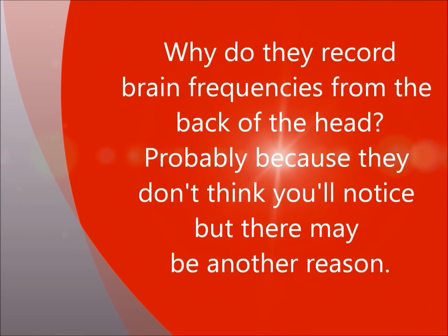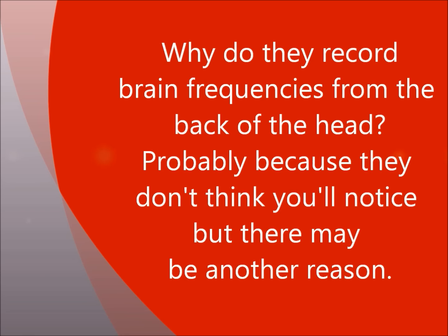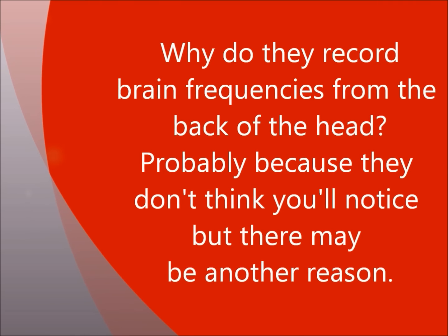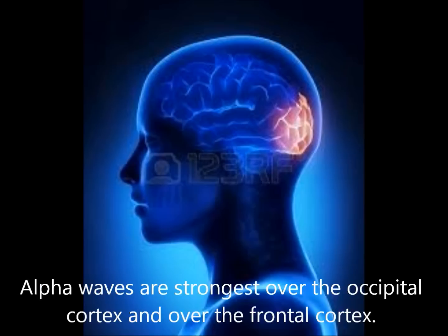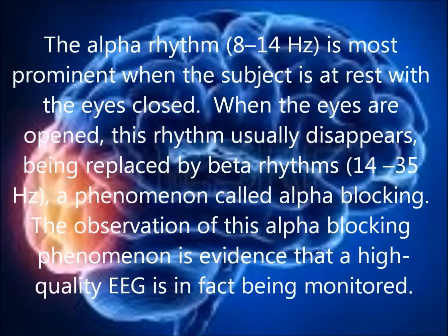Why do they record brain frequencies from the back of the head? Alpha waves are strongest over the occipital cortex and over the frontal cortex. The alpha rhythm, 8 to 14 hertz, is most prominent when the subject is at rest with the eyes closed. When the eyes are open, this rhythm usually disappears, being replaced by beta rhythms, 14 to 35 hertz — a phenomenon called alpha blocking.